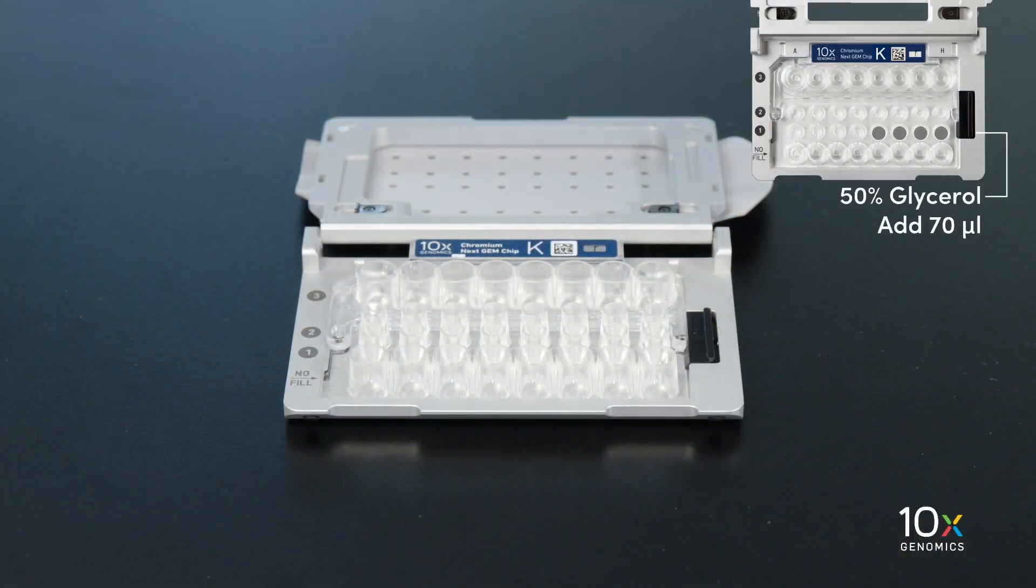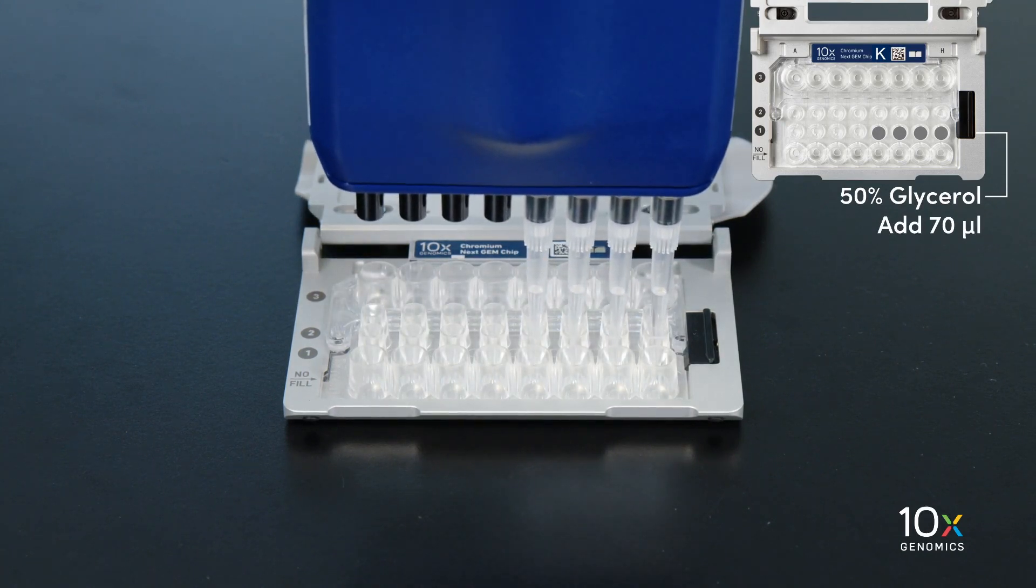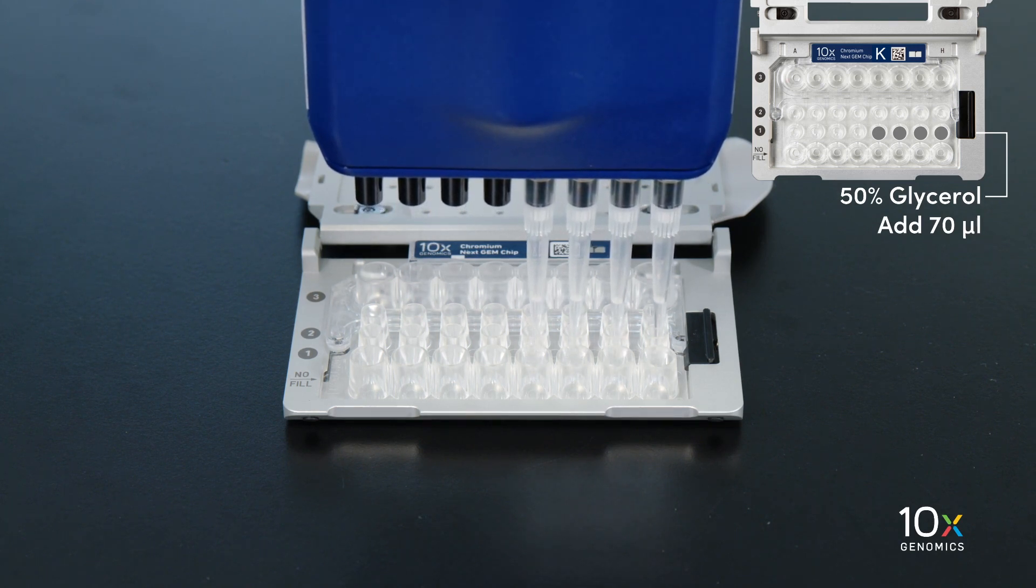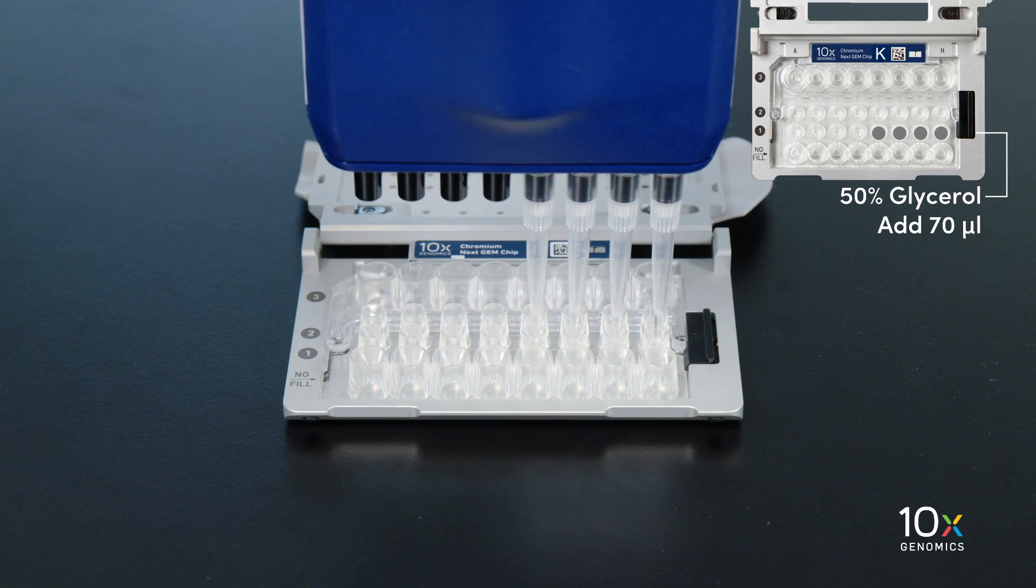We will add 70 microliters of 50% glycerol to unused wells in the row labeled 1. When you pipette into the chip, gently touch the pipette tips on the bottom surface and slowly pull up the pipetter as you are dispensing.